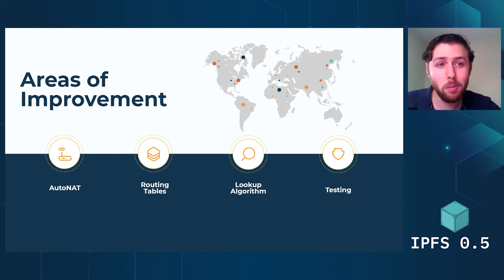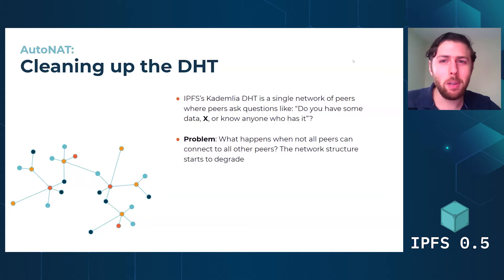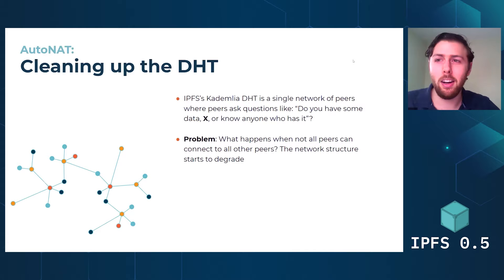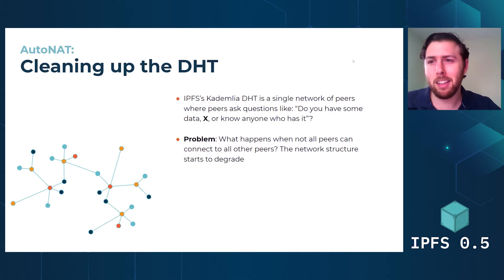So AutoNAT — cleaning up the DHT. We have this Kademlia network, which is the algorithm that IPFS uses for its distributed hash table, where you basically just ask questions like, do you have the data X, or do you know someone who has it? But what happens when you cannot reach some of the people who are given to you as responses? You're told about 10 peers, you go talk to them, but six of them are unavailable.